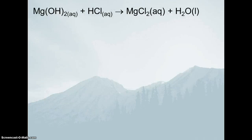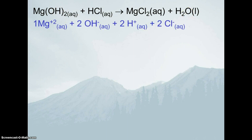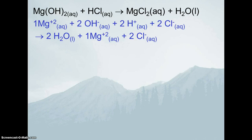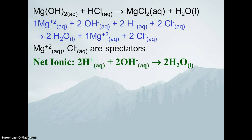Here is another similar reaction: magnesium hydroxide, a weak base (the active ingredient in Mylanta indigestion medicine), reacting with hydrochloric acid. Taking magnesium ion and chloride ion gives MgCl₂, and hydrogen ion with hydroxide ion gives water. After balancing and breaking it up, we have Mg²⁺, two OH⁻, two H⁺, and two Cl⁻ forming two waters and one MgCl₂. Chloride and magnesium are spectators, so the net ionic equation is again: H⁺ + OH⁻ → H₂O(l).